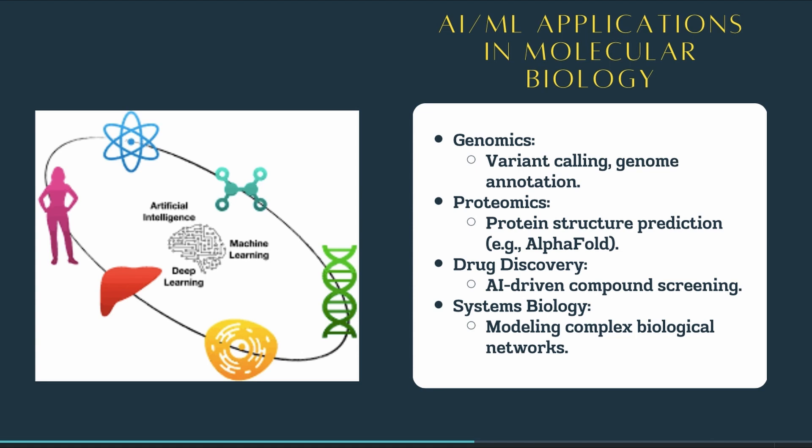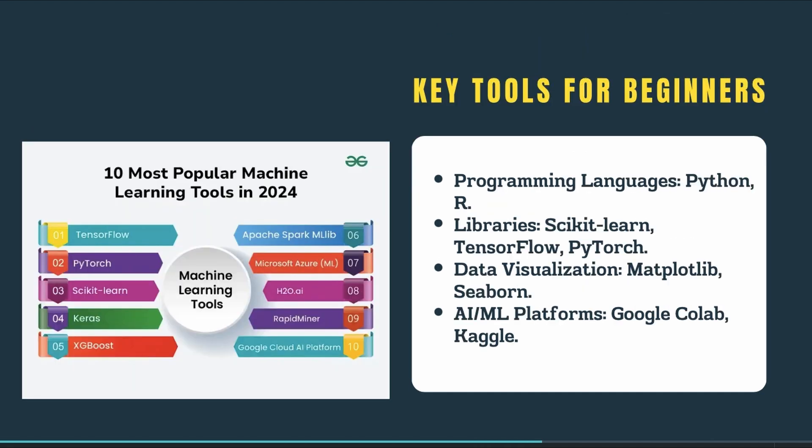The last application we'll be talking about today is systems biology. AI helps model complex biological networks, which enables us to simulate cellular processes and predict how different components of the system interact. If you're just starting out with AI/ML and molecular biology, there are some key tools that can make your journey easier.